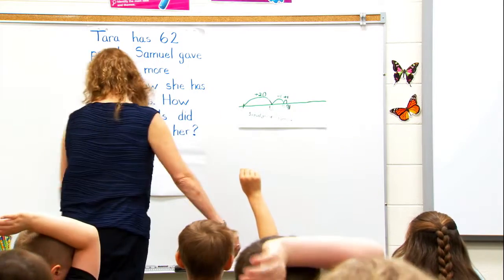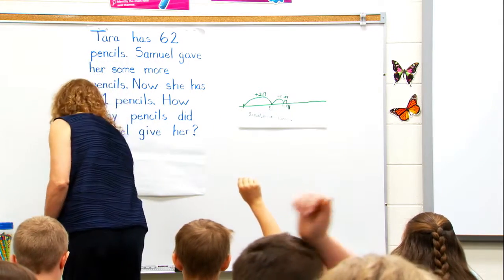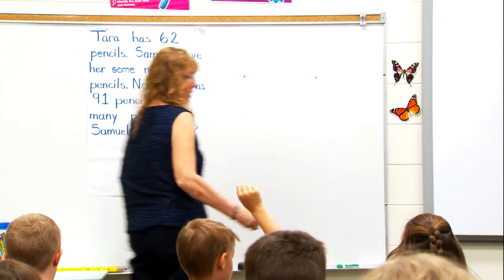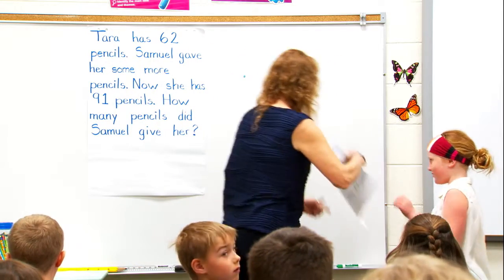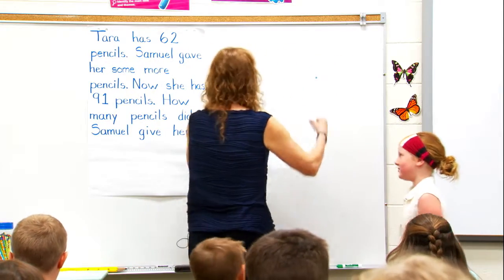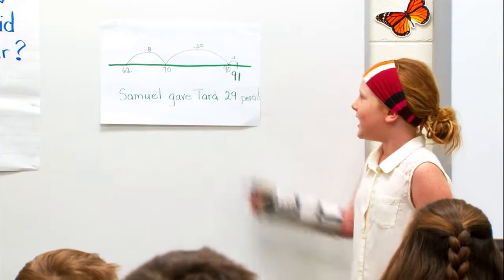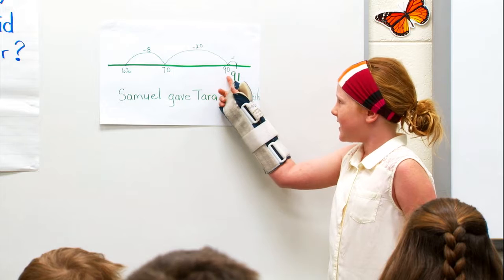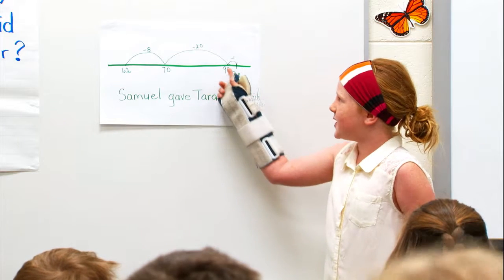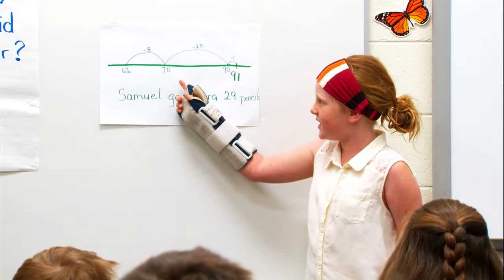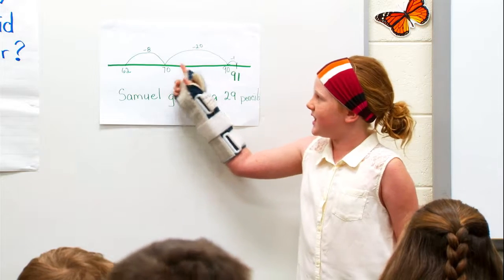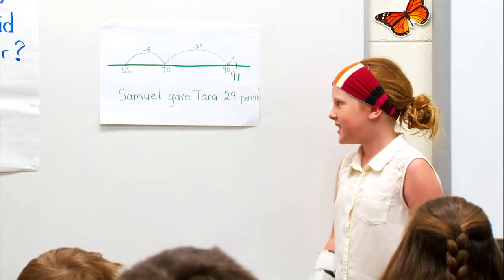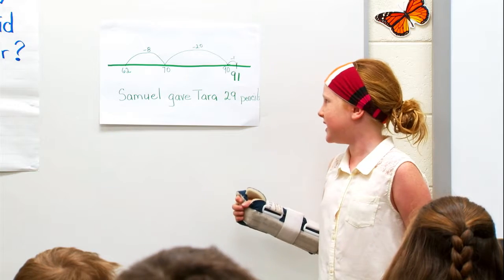You can also use subtraction to solve problems with open number lines. This student used the benchmark numbers 70 and 90 to make it easier to calculate the answer. I started at 91 and subtracted 1 to get to the benchmark 90, subtracted 20 to get to 70, and subtracted 8 to get to 62. Samuel gave Tara 29 pencils.